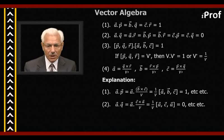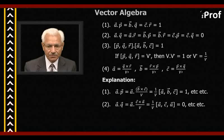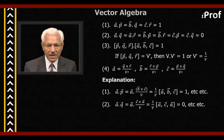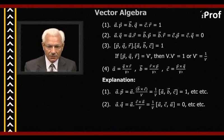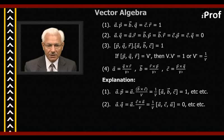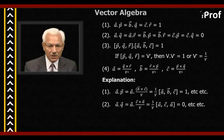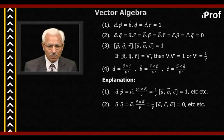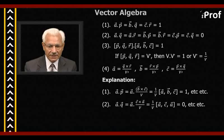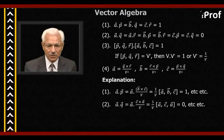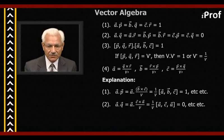If the triple scalar product of P, Q, R is equal to V dash, then V into V dash is equal to one, or V dash is equal to one upon V, which states the reciprocal nature of these two systems. The fourth property is that A equals Q cross R divided by V dash, B equals R cross P divided by V dash, and C equals P cross Q divided by V dash. This also supplies the reciprocal nature of these two systems.